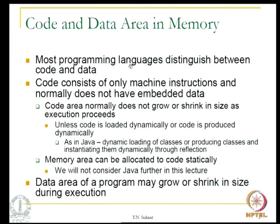Programming languages usually distinguish between code and data. Even in the language specification, we have code which uses the variables, whereas the data which declares the variables — these are all different. When we compile the program, the code produced is actually just machine instructions, and in 99.9 percent of the cases it does not have any embedded data in it.